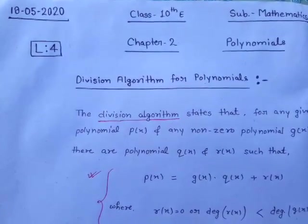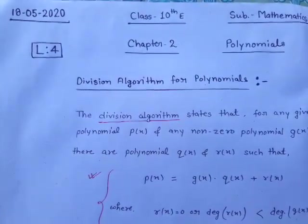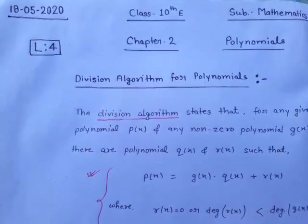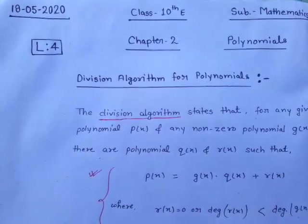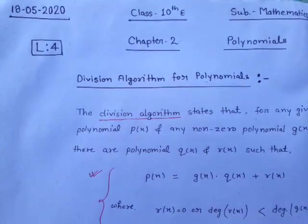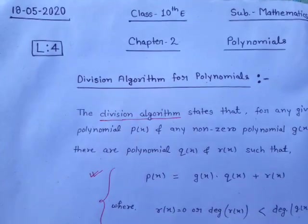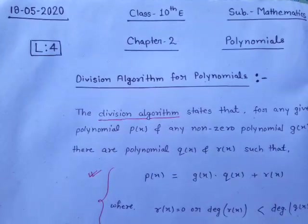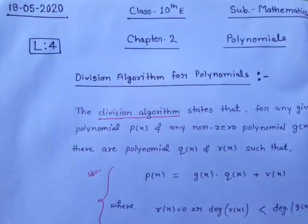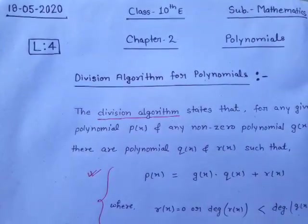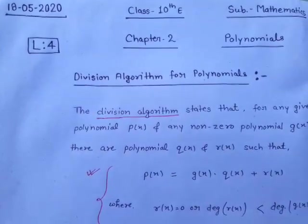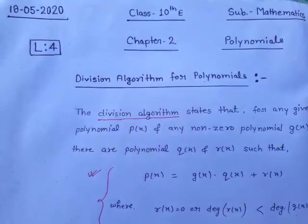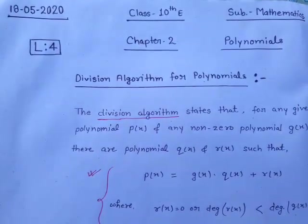Now we start your second chapter on polynomials, and this is your fourth lecture in this chapter. In the previous lecture we discussed some introduction to polynomials and also discussed some questions related to coefficients of polynomials and zeros of polynomials relationship. Now here we move to the next topic: division algorithm for polynomials.